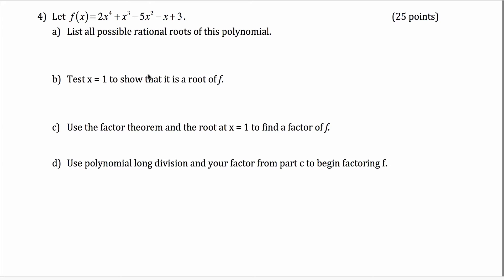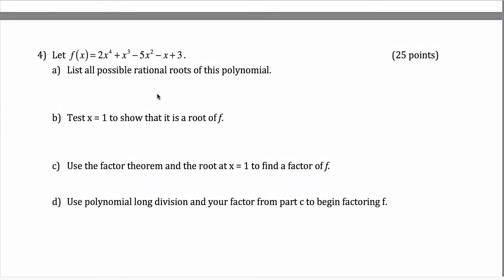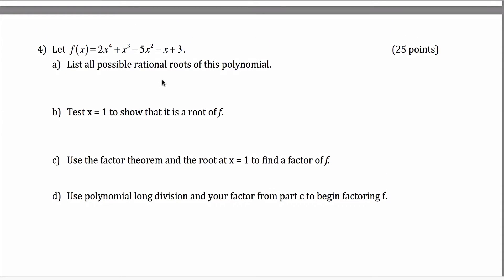Here's problem four off the final exam from fall 2016, Math 111 — a problem very common on final exams that incorporates a lot of chapter 3 ideas. In the first part, you use the rational root theorem to list all the possible rational roots of the polynomial — not all the roots, just the possible ones that happen to also be rational numbers.